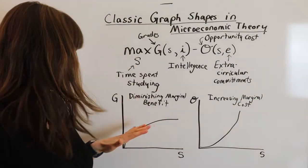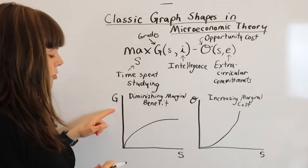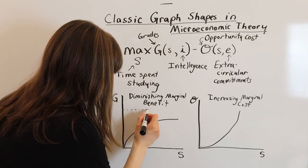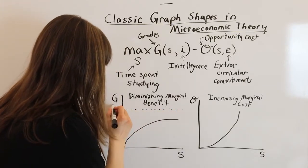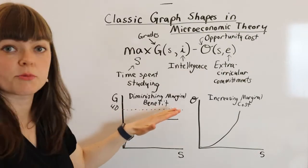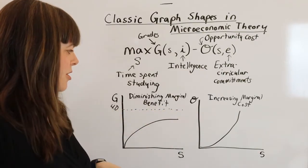Alright, this is what the classic shapes look like. And of course, grades cannot exceed 4.0, so we know that there's a maximum limit to what your grades can be of 4.0. And that's going to indicate that you can never quite reach that. So we're probably going to have diminishing marginal benefit.